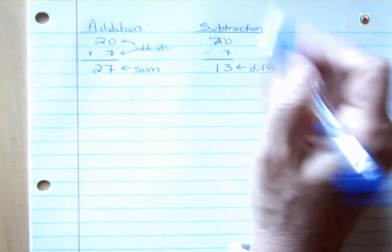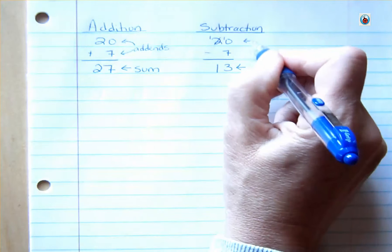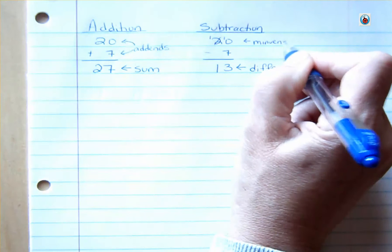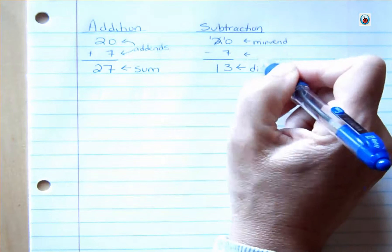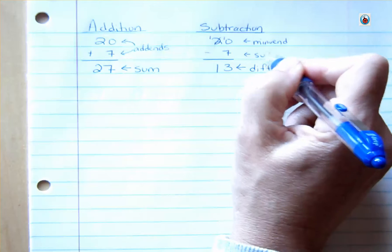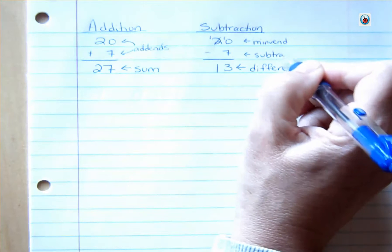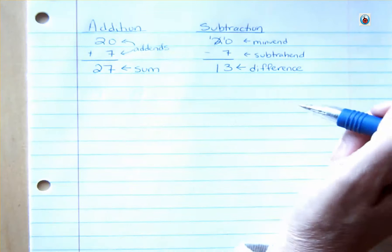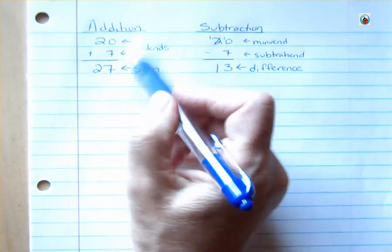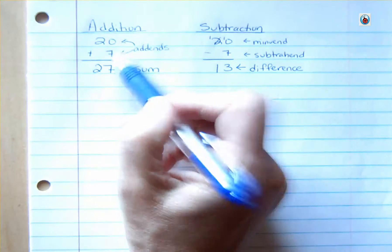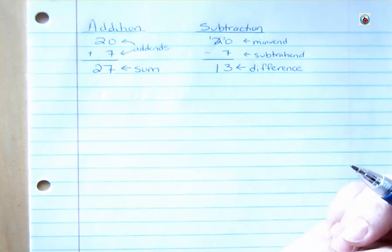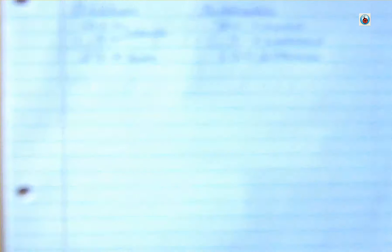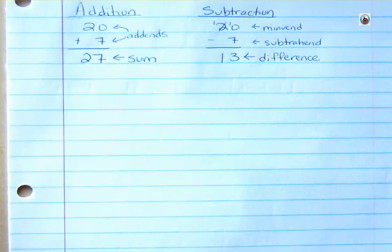Now, this also has a name. You have a minuend is what you're subtracting from, and you have a subtrahend that you're subtracting. And it makes a difference, the order when you're talking about subtraction, but it doesn't make a difference when you're adding. That's why these are both called addends. There's no separate name. Whatever's on top or bottom doesn't matter. But it does matter when you're talking about subtraction. That's why we call them different things.